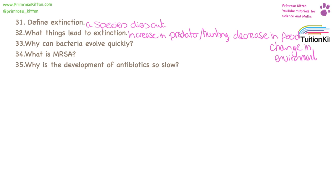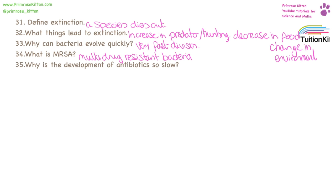Bacteria can evolve so quickly because they divide every 20 minutes. MRSA stands for Methicillin Resistant Staphylococcus Aureus and it's a multi-drug resistant bacteria, meaning it is resistant to the majority of antibiotics. The development of new antibiotics is so slow because it takes a long time to find new compounds and there is not a lot of incentive for drug development companies to produce them.